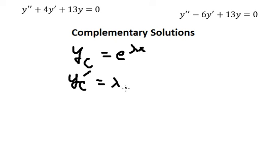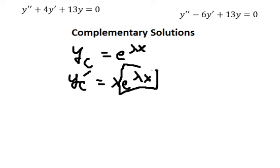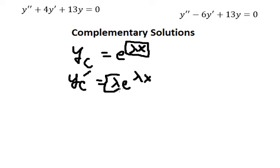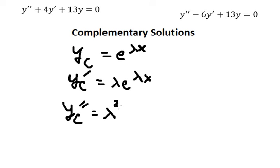We have lambda e to the power of lambda x. So when we do the first derivative of this one, we keep the same e to the power of lambda x, and then we do the first derivative of lambda x and get lambda. Now we go to the second derivative of yc, and we have lambda squared e to the power of lambda x.